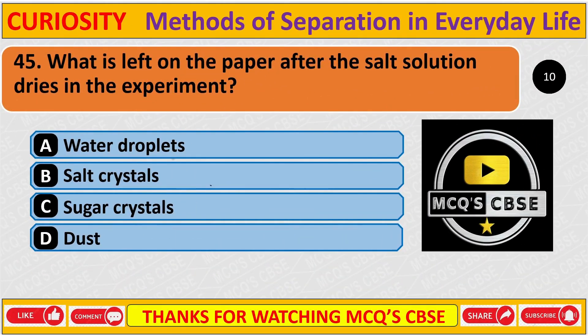Question: What is left on the paper after the salt solution dries in the experiment? Correct answer is B: Salt crystals.